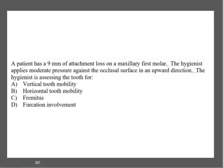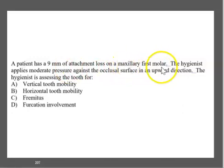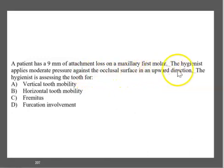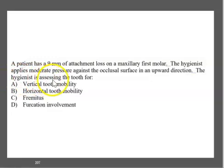The first question — these are all period-based questions — is: a patient has 9mm of attachment loss on a maxillary molar. The hygienist applies moderate pressure against the occlusal surface in an upward direction, upward being the key word here. The hygienist is assessing for what?